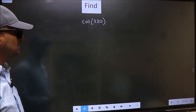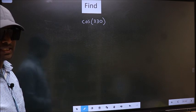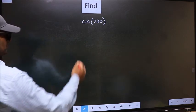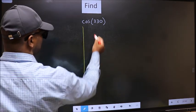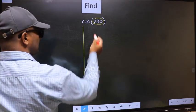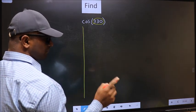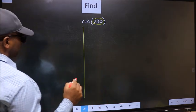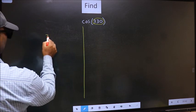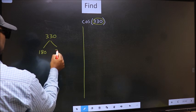Find cos 330. To find this, we should follow this method. See, here we have 330. Now we should check 330 lies between which two multiples of 180. What I mean is 330 lies between 180 and 360.